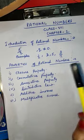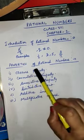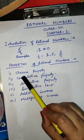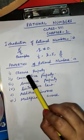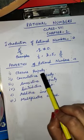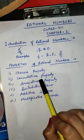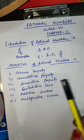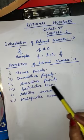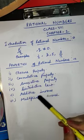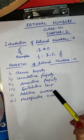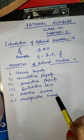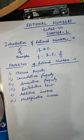Today we will discuss about some properties of rational numbers. First is Closure Property, second is Commutative Property, third is Associative Property, fourth is Distributive Law, fifth is Additive Inverse, and the sixth and last is Multiplicative Inverse.